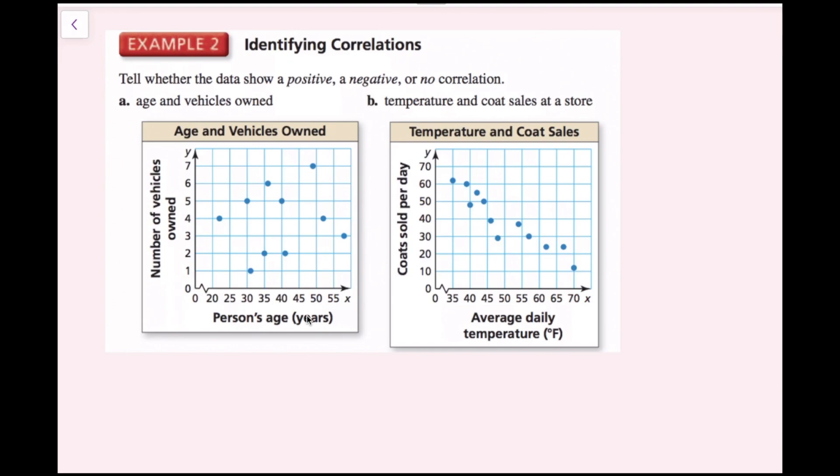The x-axis is person's age, y-axis is the number of vehicles that they have owned. We see that this data is scattered all over the place. There's not really any trend. You might want to say there is a slight positive correlation, but it's definitely not strong. I would say that Part A, there's no real correlation.